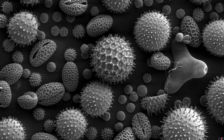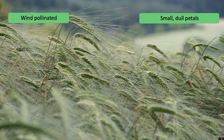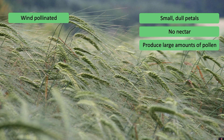Pollination is the transfer of pollen from the anther to the stigma. Some plants are wind pollinated. In these plants, the pollen produced by the anther is transferred by the wind and will attach to the stigma of another plant. Wind pollinated plants have typically small, dull petals. They don't produce nectar but they do produce large amounts of pollen.